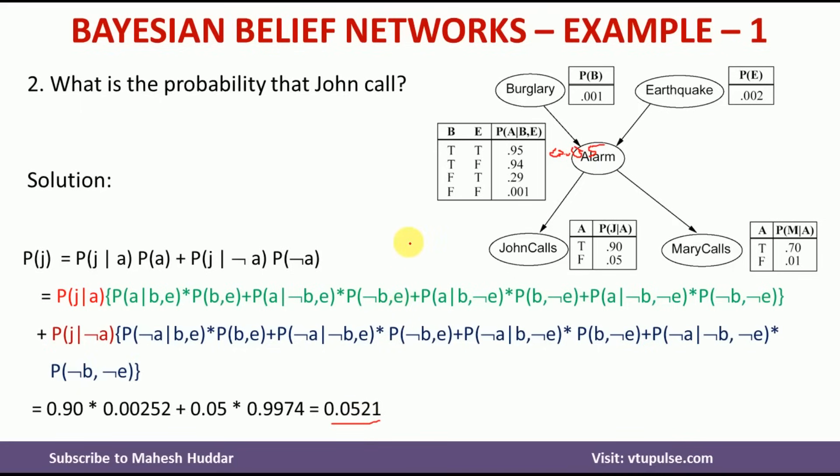So in this video, we understood the Bayesian belief network with a simple numerical example. We calculated two things: first, how to find the joint probability distribution when all events are given, and second, how to calculate the probability when only a single event is given, which is called marginal probability.